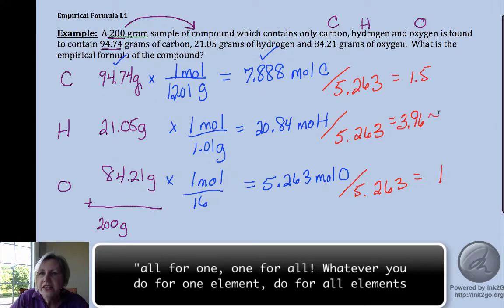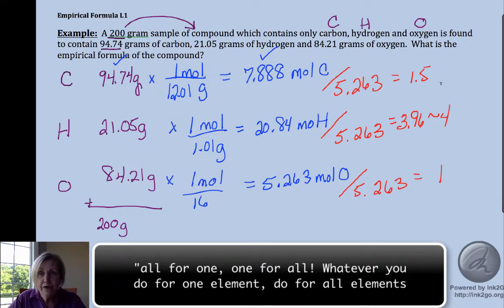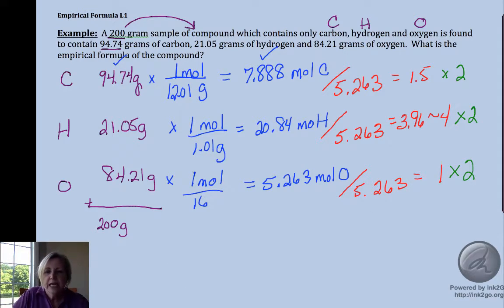This we can round to 4, but we can't round the 1.5. We're going to have to do that last step: multiply till whole. So since this is a half, what multiplies a half? If you have a half and you want to multiply it to a whole number, you have to multiply it by 2. All for one, one for all. You have to do it to every single one of these.